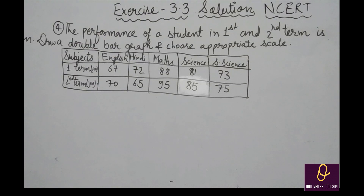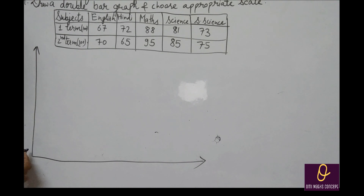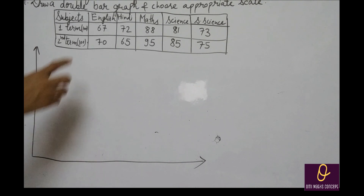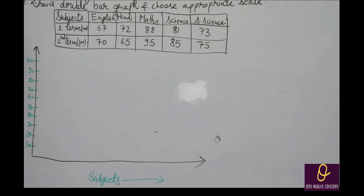Now next question: the performance of a student in first and second term is given. Draw a double bar graph using appropriate scale and answer the following. आपको draw भी करना है और questions के answer भी करने हैं. Scale के लिए देखो: 70, 65, 95, 85, 75 और 67, 72 — तो 10-10 का gap लेना होगा. First small division पर 10 लेंगे: 10, 20, 30, 40, 50, 60, 70, 80, 100 — maximum marks 100 हैं.